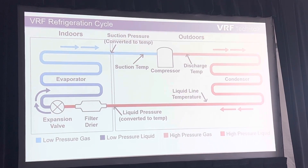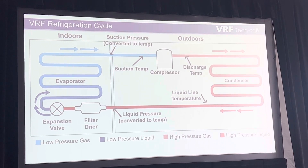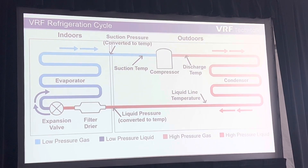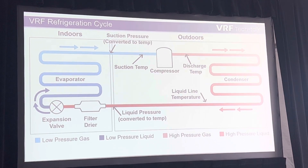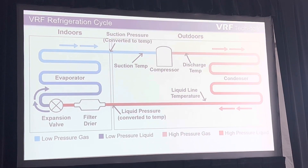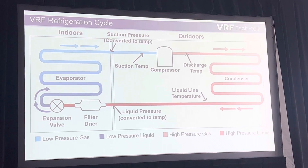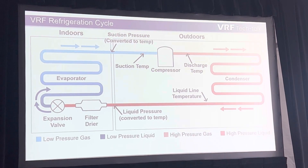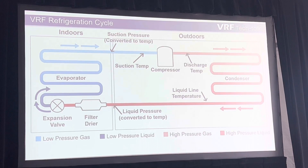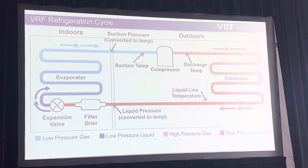And then suction superheat — it's not suction entering the unit, it's suction at the compressor. A lot of things happen between vapor injection and the sub-cooling circuit before it gets to the compressor. We don't want to be misled by other things that might be influenced in our refrigeration circuits before we get back to the compressor.